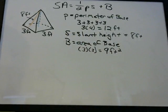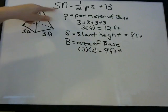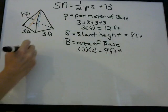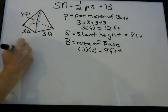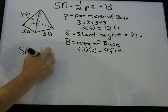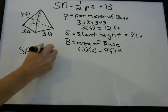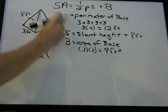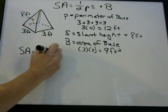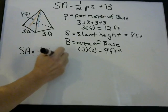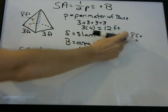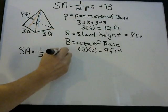So what is the total surface area of this pyramid? It's one-half times P — what is P? Twelve feet. Times S, the slant height, which is 8 feet.